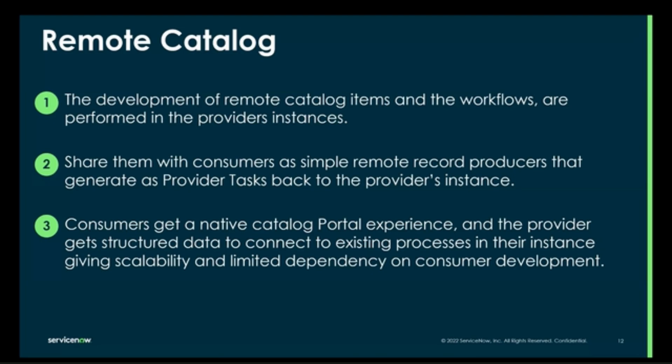Looking at it from a Now on Now Support perspective — using Impact as an example — anyone who has the Impact standard tier gets these items, the middle tier gets these, and the upper tier gets these items. As an administrator within ServiceNow, you don't have to manage these on an individual customer basis. When the contract information gets updated in the system, it will automatically update and publish that information to a customer.